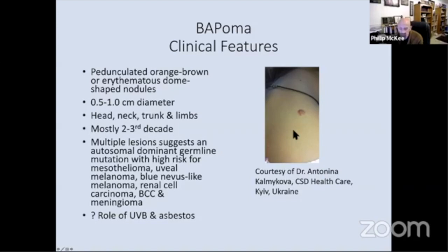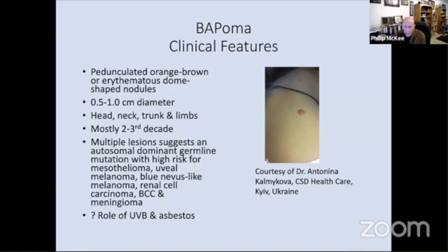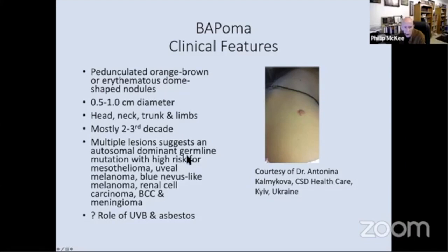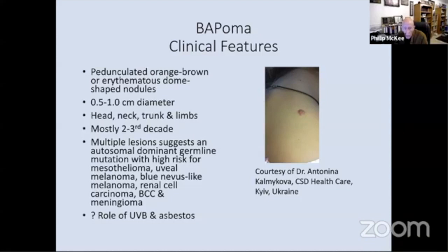This case that Antonina Kalmakova very kindly shared with me shows a lovely example which looks rather keloidal. I've seen a number of these lesions that present clinically looking a bit like a keloid. Now, the important thing about recognizing this tumor, particularly when they're multiple, is that this may be a cutaneous manifestation of an autosomal dominant germline mutation. That's really very important because if a patient fits into that category, then he or she is at risk of multiple serious tumors, including high grade uveal melanoma, mesothelioma, blue nevus-like melanoma, and renal cell carcinoma.